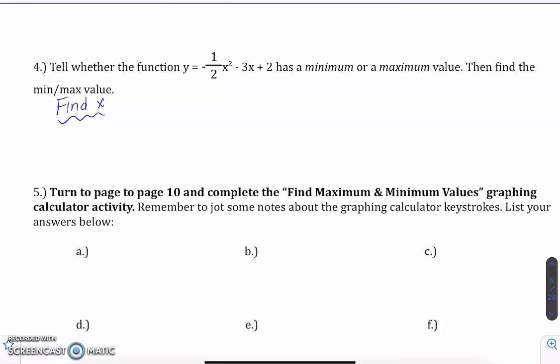So for number four, it asks us to tell whether the function y equals negative one half x squared minus three x plus two has a minimum or maximum value, and then find that minimum or maximum value.